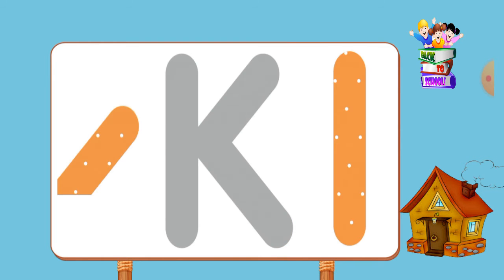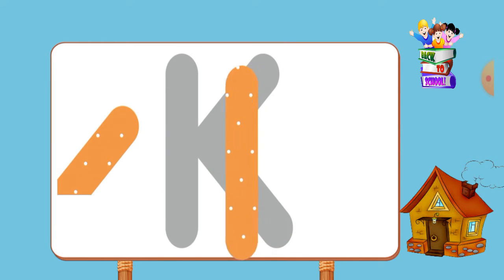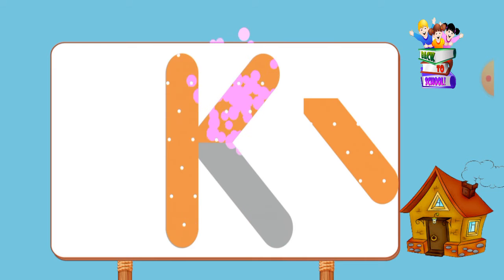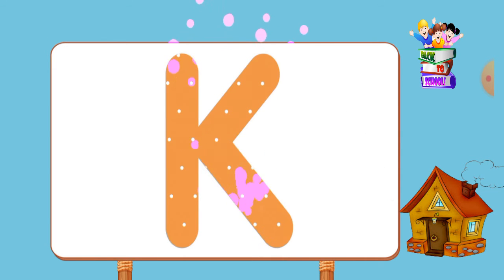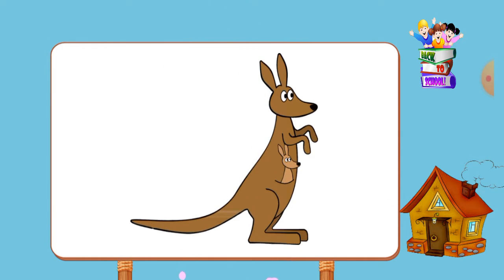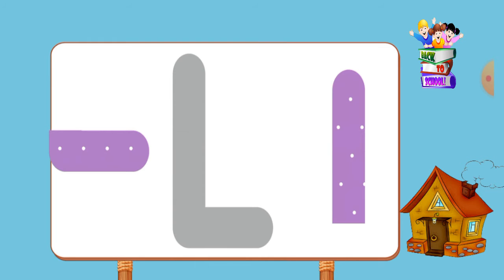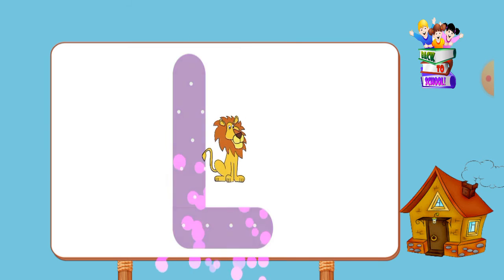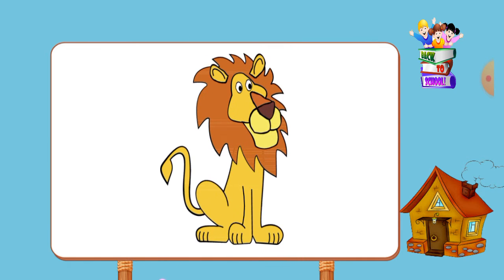Match the pictures to their shadows. K, k, kangaroo. Match the pictures to their shadows. L, l, lion.